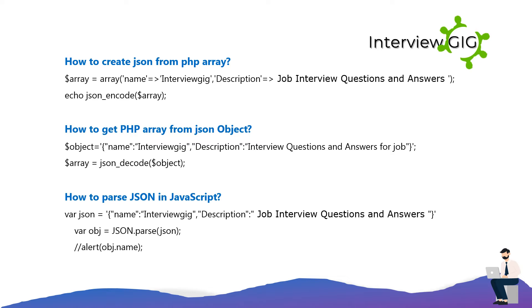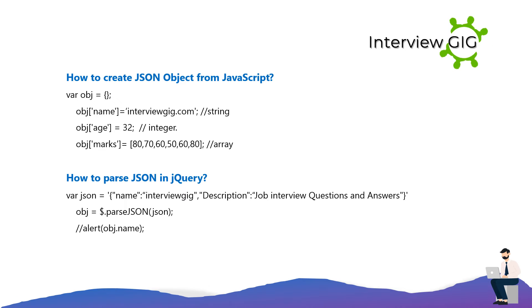How to parse JSON in JavaScript: var json = '{"name":"InterviewGig","description":"Job Interview Questions and Answers"}'; var obj = JSON.parse(json); // alert(obj.name). How to create a JSON object from JavaScript: var obj = {}; obj.name = 'InterviewGig.com'; // string. obj.age = 32; // integer. obj.marks = [80, 70, 60, 50, 60, 80]; // array.